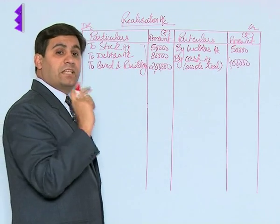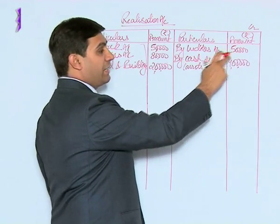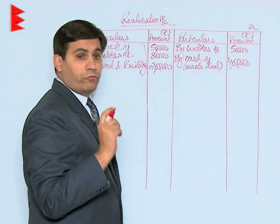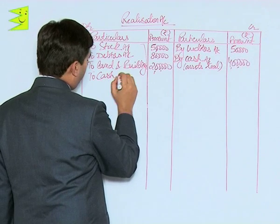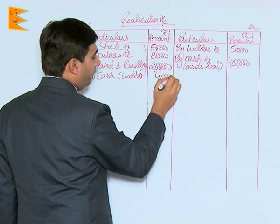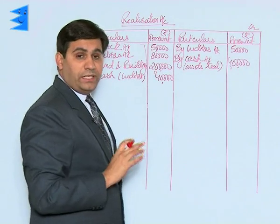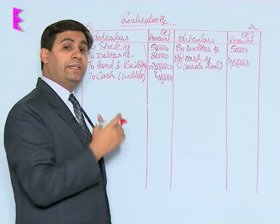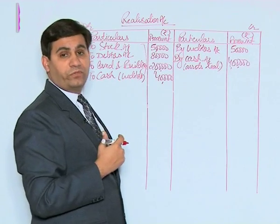Next, we ensure that liabilities are paid off. Creditors appeared at ₹50,000 and it is clearly given that they were paid off at ₹40,000, so we record 'to cash ₹40,000.' There are no further entries — no details about any expense on realization or any unrecorded assets or liabilities in the question.